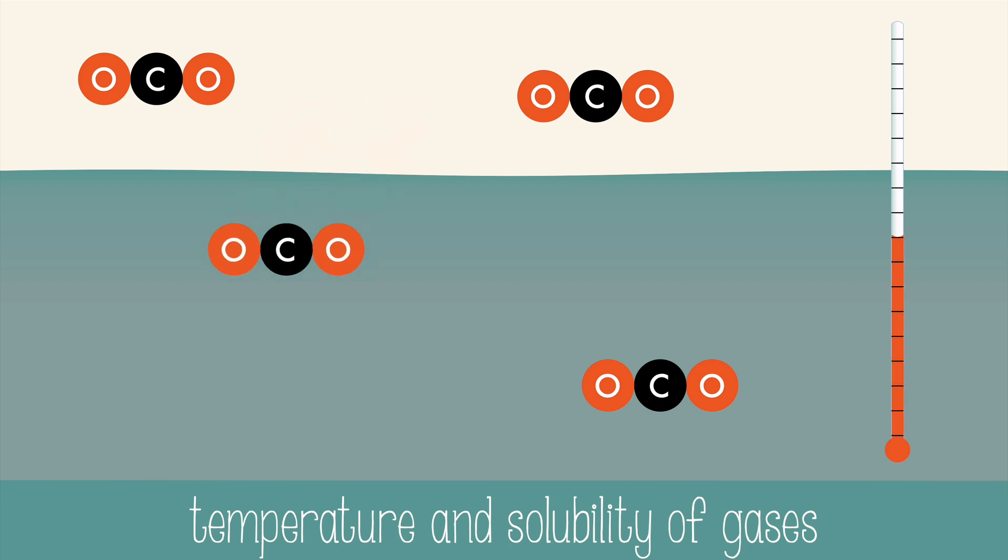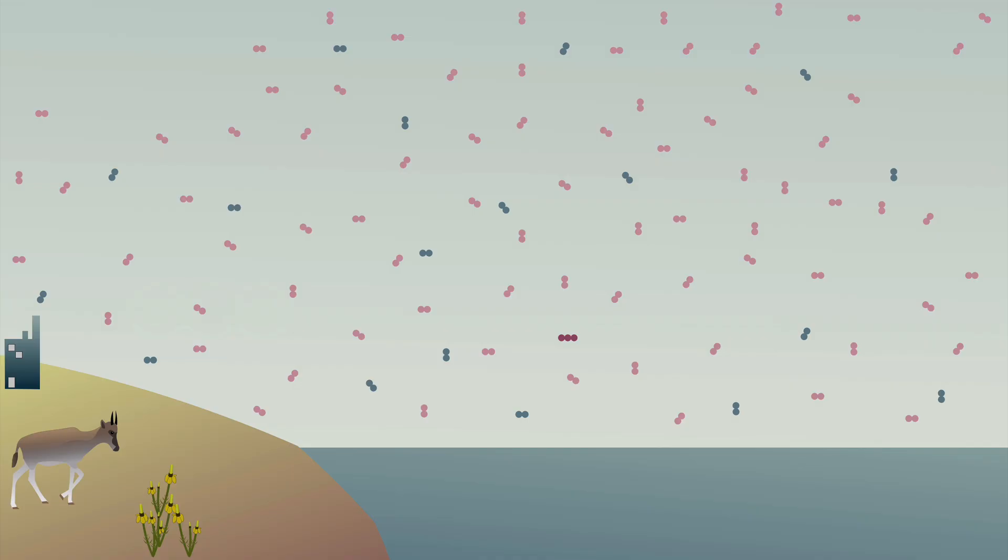Colder liquids can dissolve more gas, so more carbon dioxide can dissolve into colder ocean surfaces. So if the ocean temperatures are also rising from global warming, the oceans will not be able to dissolve as much carbon dioxide.